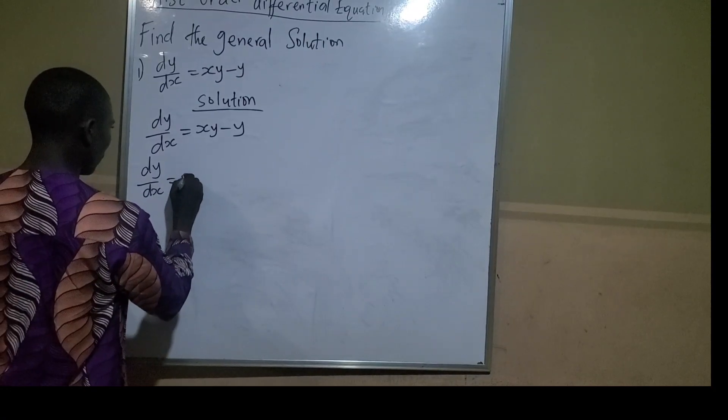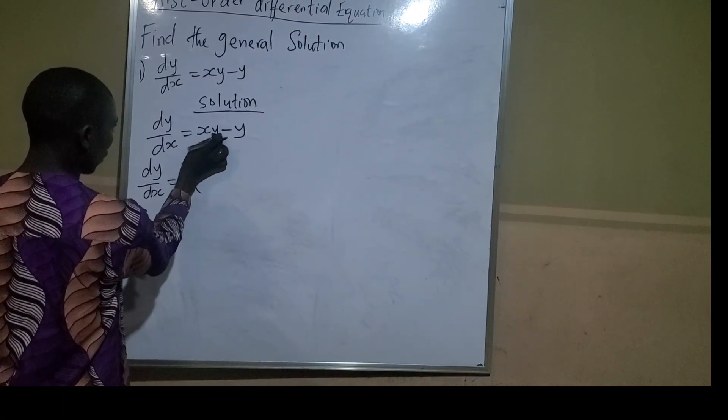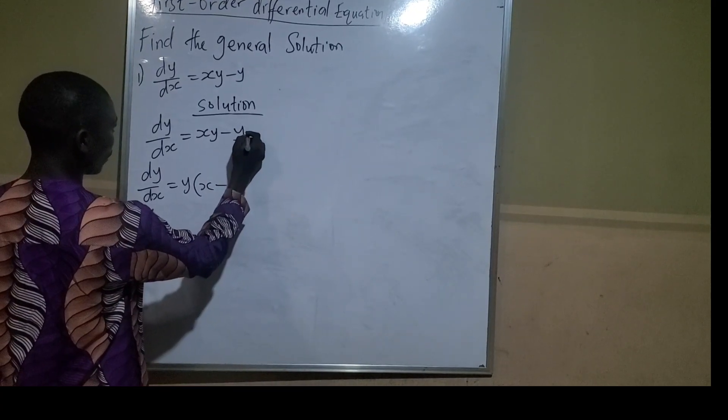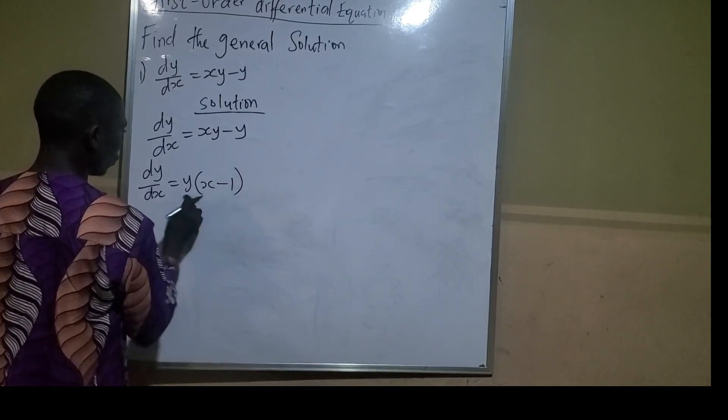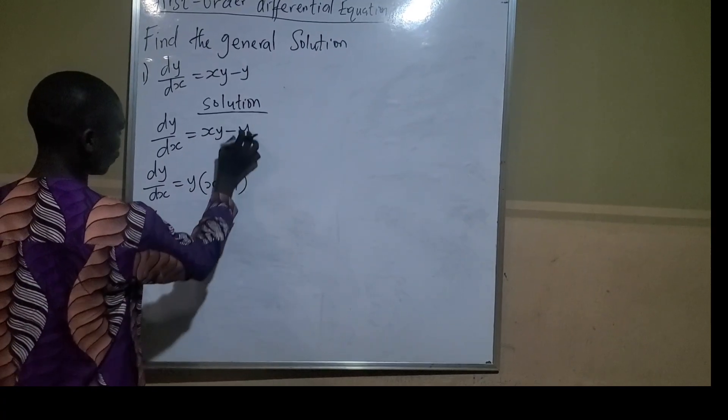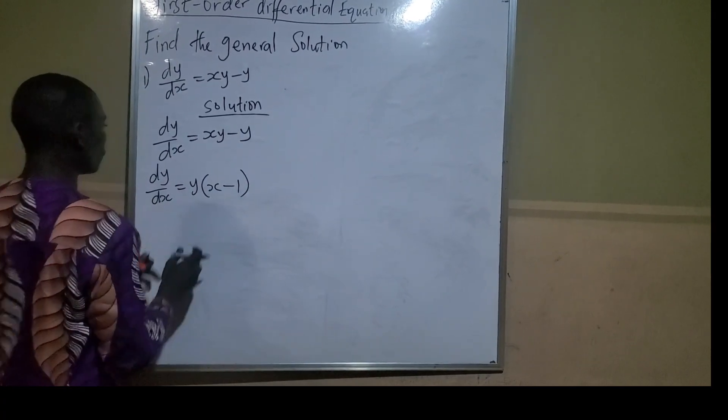So let me bring y out. If I bring y out here, I'll be left with x minus 1. So y times x gives me xy, minus y times 1 gives me y. Therefore, dy/dx equals y(x - 1).